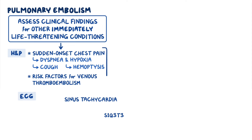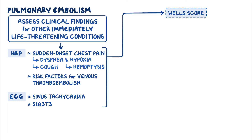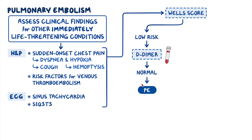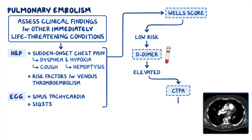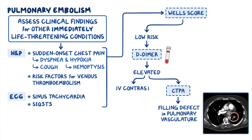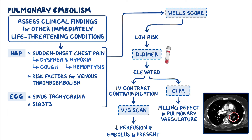If you suspect PE, you should first calculate your patient's Wells score. This tells you their risk of having a PE. In low-risk patients, order a D-dimer. If the D-dimer is normal, you have ruled out PE with excellent negative predictive value. If the D-dimer is elevated, get a CT pulmonary angiogram, or CTPA. A PE will show up as filling defects within the pulmonary vasculature. IV contrast is contraindicated in some patients, like those with renal disease, so we can order a ventilation perfusion, or VQ scan. The scan will show normal ventilation in the lungs, but decreased perfusion if an embolus is present. If the Wells score puts the patient at high risk for PE, the pre-test probability is very high, so you skip the D-dimer and go straight to CT pulmonary angiogram or VQ scan.